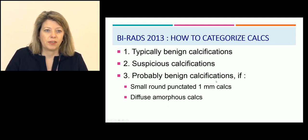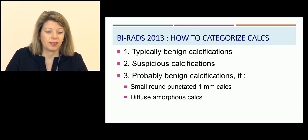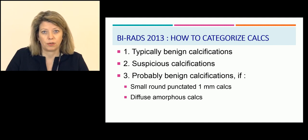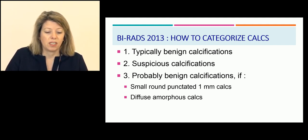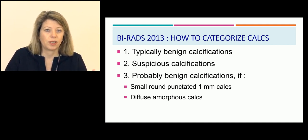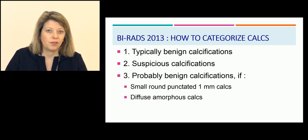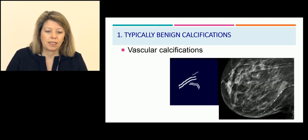In the new BI-RADS classification, it's quite simple — there are essentially two categories: typically benign calcifications and suspicious calcifications. The only categories for probably benign calcifications include small round punctated calcifications under 1 mm, and diffuse amorphous calcifications. Let's see some examples of typically benign calcifications.